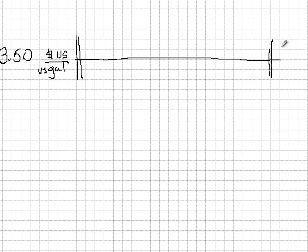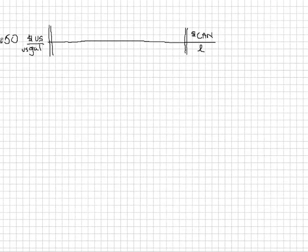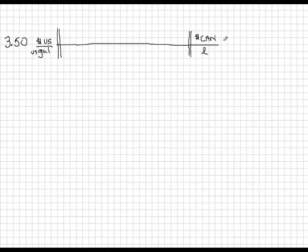And down here at the, after this double line, we're going to write the units that we're trying to get towards. And so we are trying to get towards Canadian dollars per liter. Because that's how our gas is priced, of course. And so we'd like to know, what is $3.50 U.S. per gallon worth equivalent to in Canadian dollars per liter?